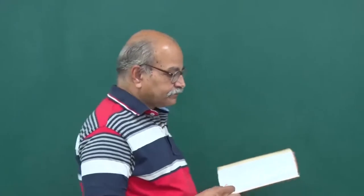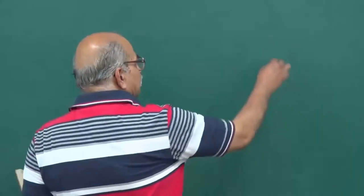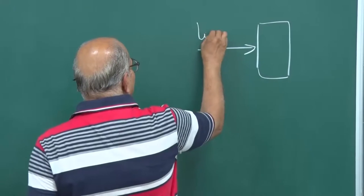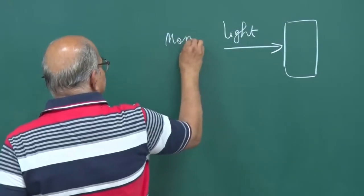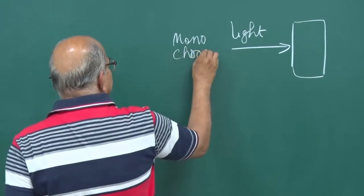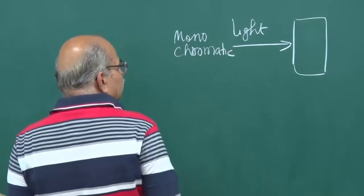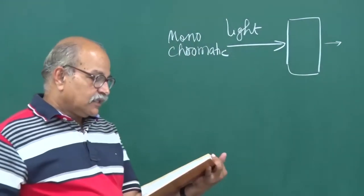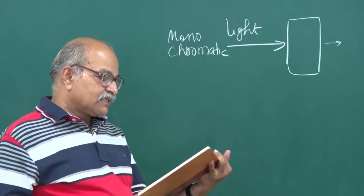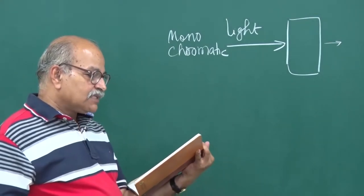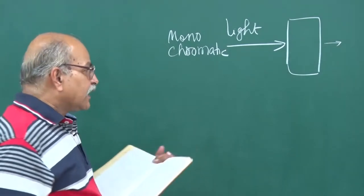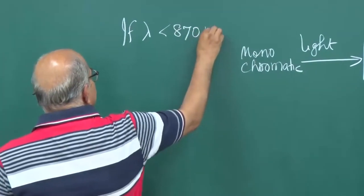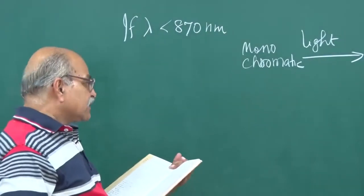The first problem: if you have a semiconductor and allow monochromatic light to fall on it, how much is absorbed and how much is transmitted? The problem says that monochromatic light is made to fall on a semiconductor and it is found that if lambda is less than 870 nanometers, the semiconductor is opaque.